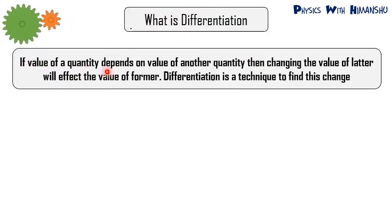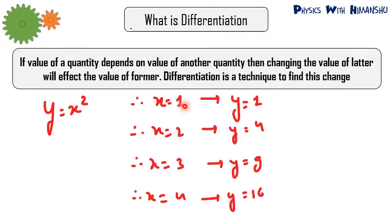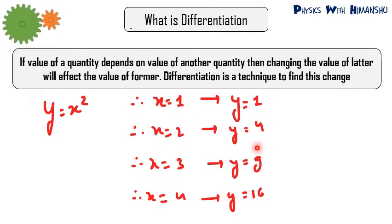So what is differentiation? If the value of a quantity depends on the value of another quantity, then changing the value of the latter will affect the value of the former. Differentiation is a technique to find this change. For example, suppose y is equal to x squared. The value of y depends on x. At x=1, y=1; at x=2, y=4; at x=3, y=9; at x=4, y=16. So if I change the value of x, it changes the value of y.